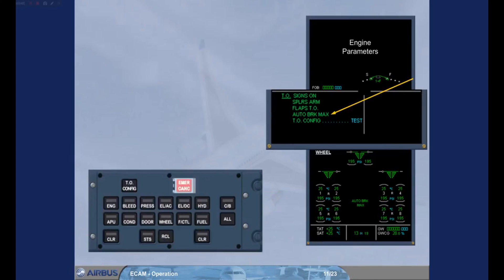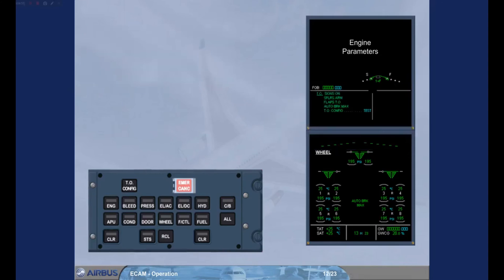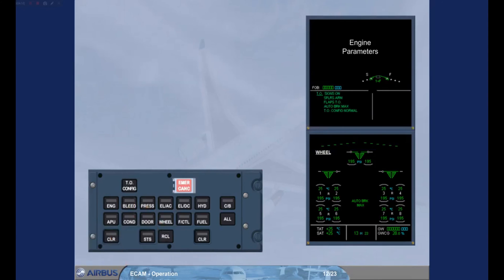The blue action item changed to green and moved. Just before completing the before takeoff checklist, the takeoff configuration test is carried out. This is done by pressing the takeoff configuration key on the ECAM control panel. By selecting the takeoff configuration key, the ECAM system simulates the application of takeoff power. If the aircraft is not in a takeoff configuration — for example, flaps not in the correct configuration — then an ECAM warning or caution will be triggered. Provided the ECAM detects that the aircraft is in a normal configuration, the takeoff configuration memo changes to normal. Observe that there are no blue action lines left on the engine warning display.